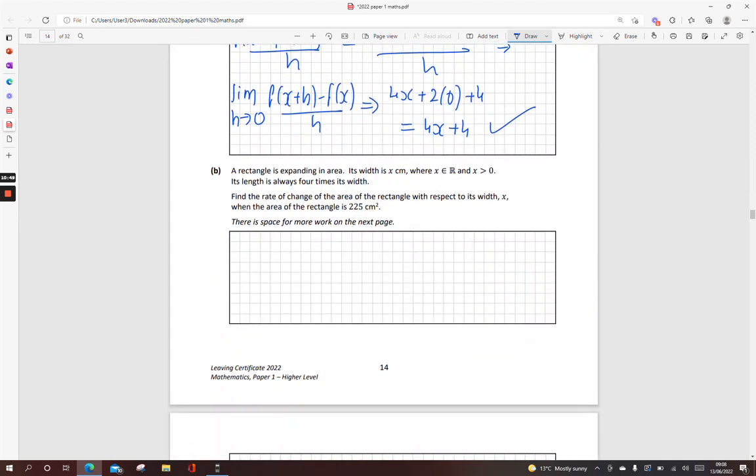This one, a rectangle is expanding in its area. If its width is x, x is bigger than 0 naturally enough. Its length is always 4 times its width, so 4x. Find the rate of change of the area of the rectangle with respect to its width. What I'm thinking there is the area of that rectangle is found by length times width.